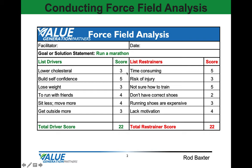So I like to add a strength level for each of these elements. Our template has a drop-down that gives you the opportunity to select 1 through 5, with 1 being a weak strength level and 5 being a strong level. In this case, lower cholesterol I gave a strength level of 3, build confidence I gave a strength level of 5, time-consuming I gave a strength level of 5, and risk of injury a 3. I did that for all the drivers and restrainers, and each column provides a sum total. In this case, they're both 22.